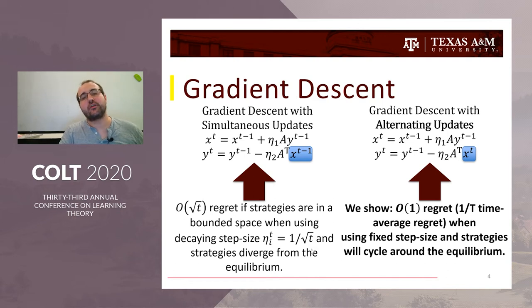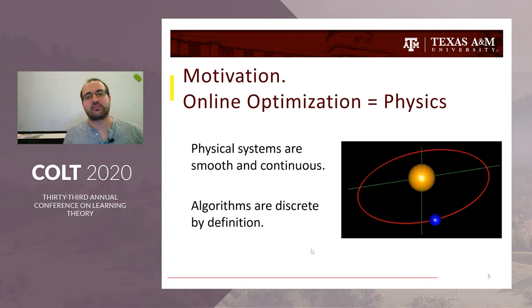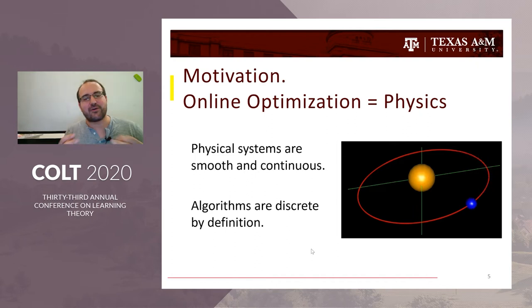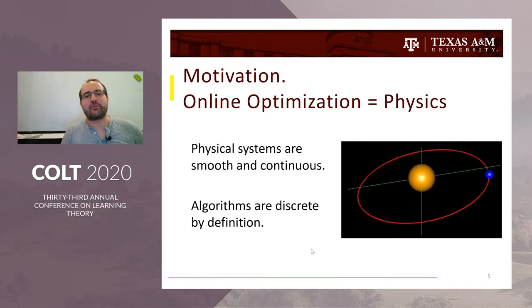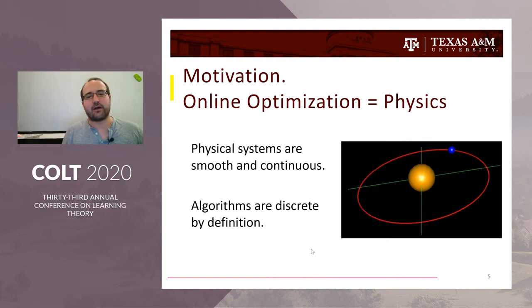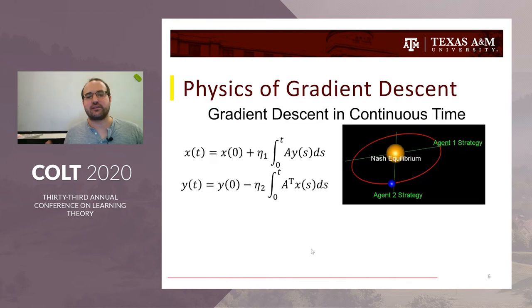The way we establish this is by understanding the system as a dynamical — specifically physical — system, which might be surprising because we think of physical systems as smooth and continuous, while algorithms are discrete. They bounce around and are fundamentally not smooth and continuous. But I think the easiest way to start thinking about online optimization as a physical system is by thinking of it in continuous time.